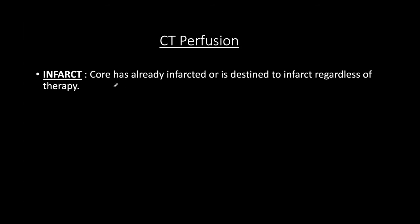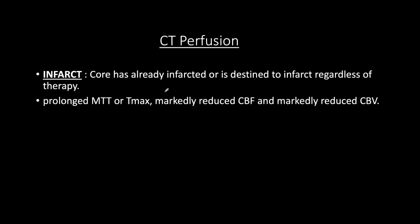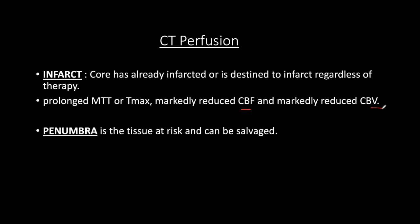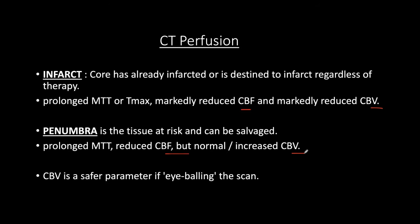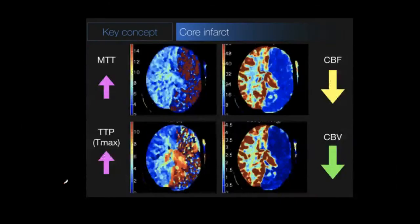Infarct core is tissue that has already infarcted or is destined to infarct regardless of therapy. It shows prolonged mean transit time or Tmax, markedly decreased cerebral blood flow, and decreased cerebral blood volume. Penumbra is tissue at risk that can be salvaged — that's where neurologists come in. Penumbra shows prolonged mean transit time and decreased flow, but normal or even increased cerebral blood volume. Looking at blood volume is a quick way to distinguish infarcted tissue from penumbra.